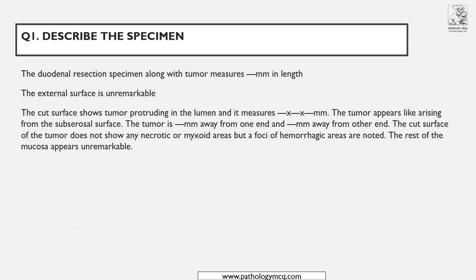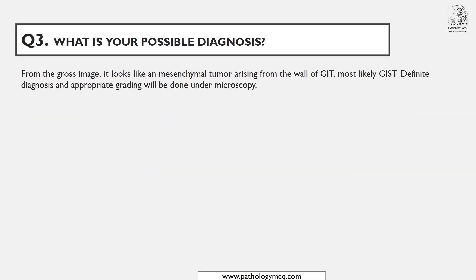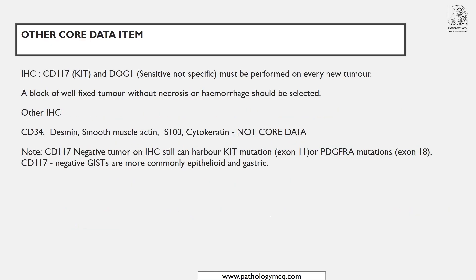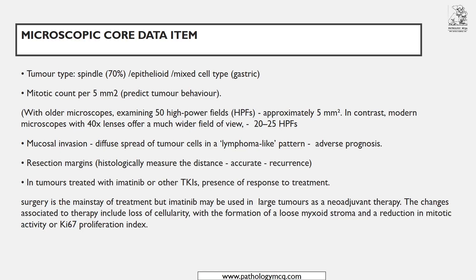If the gross shows no necrotic or myxoid areas, note it. Myxoid areas are significant because they suggest the patient has received neoadjuvant chemotherapy. You would also see reduction in mitotic activity or reduced Ki-67. If there is a prior biopsy, compare it to assess whether mitosis has decreased or increased. To summarize microscopy: note tumor type, mitotic count, invasion, resection margin, and treatment response.